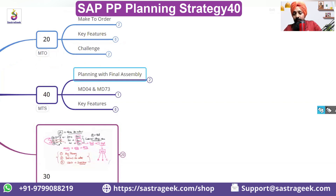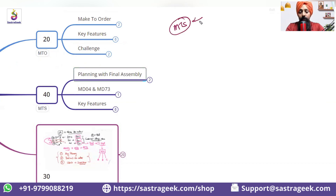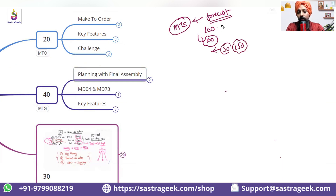We have discussed make-to-stock and also make-to-order. The problem with make-to-stock is that it completely depends on the forecast. If your forecast is 100 you produce 100, but what will happen if you get a sales order of 150?